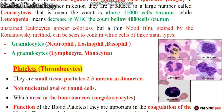White blood cells called granulocytes have cytoplasm that contains granules — because their cytoplasm contains granules, these cells are called granulocytes. These granules play an important role in the immune process, as they produce certain enzymes and other substances.